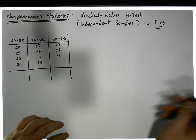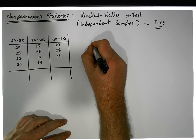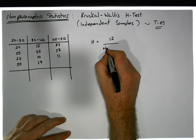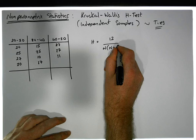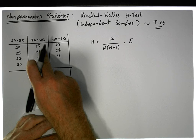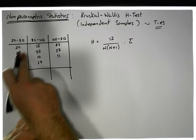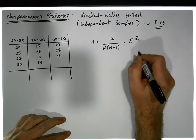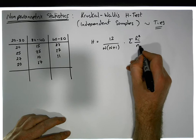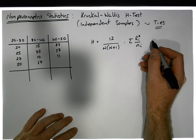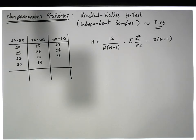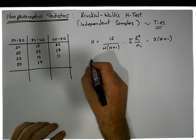The test statistic important for this is the H statistic. H equals 12 divided by the total number of observations N times N plus 1, times the sum over each group of the squared sum of ranks for that group divided by the group size, and then we subtract three times N plus 1. This is effectively our test statistic.